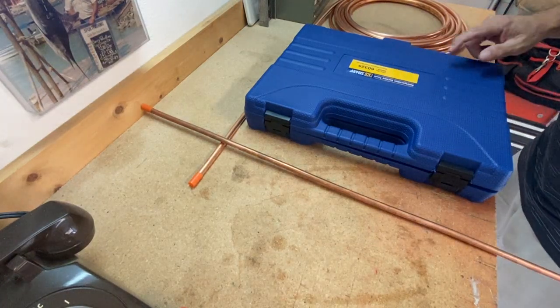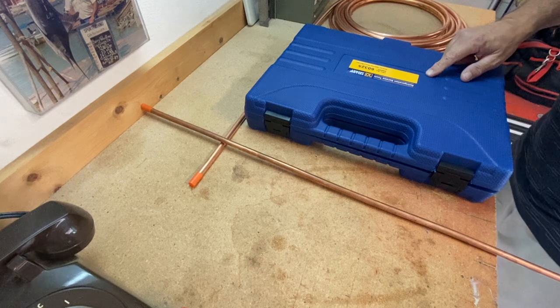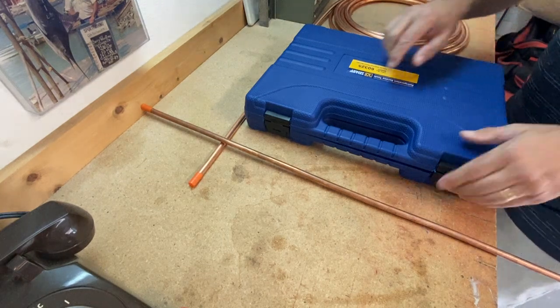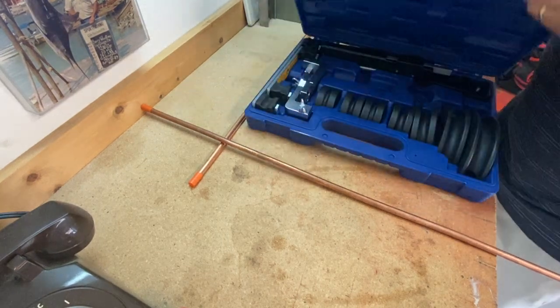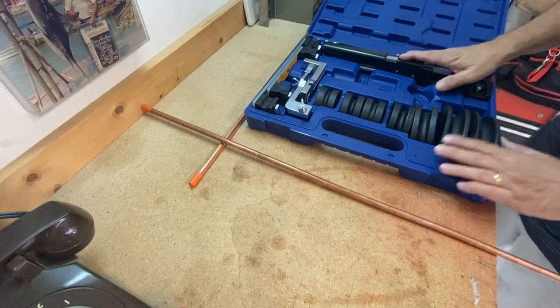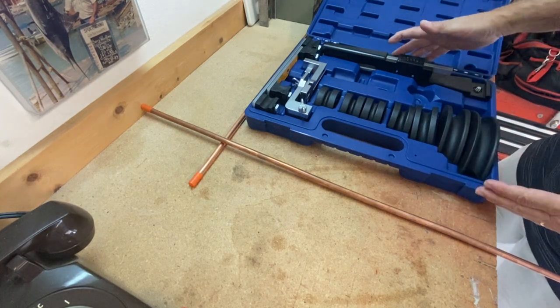Okay, first tool I want to show you guys today is the Ratchet Hand Bender for bending tubing. It comes in a nice plastic case. Just slide this whole case in your truck when you're ready to use it.